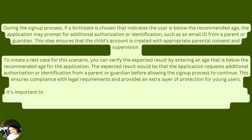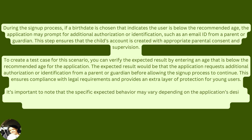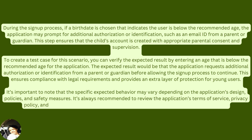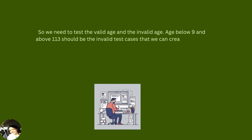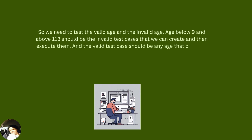This step ensures that a child's account is created with appropriate parental consent and supervision. To create a test case for this scenario, you can verify the expected result by entering an age below the recommended age. The expected result is that the application requests additional authorization from a parent or guardian before allowing sign-up to continue, ensuring compliance with legal requirements and providing extra protection for young users. So we need to test the valid age and the invalid age — below 9 and above 113 are invalid.